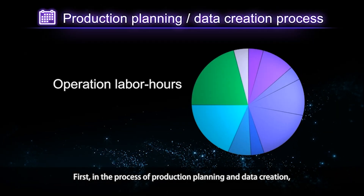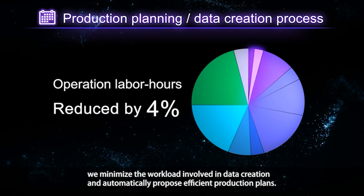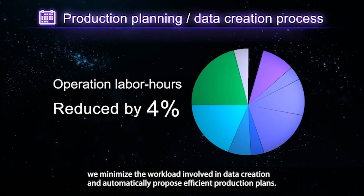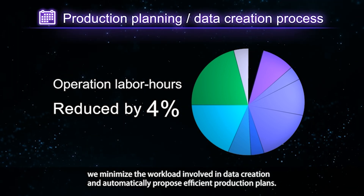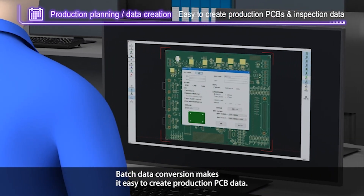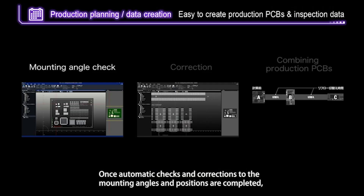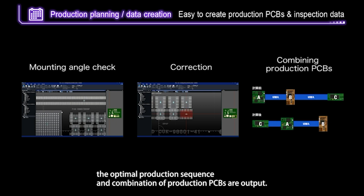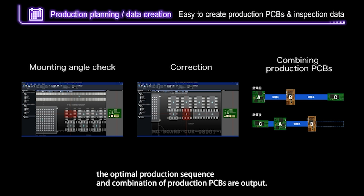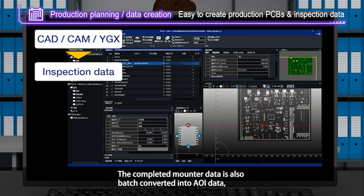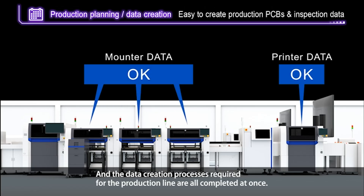First, in the process of production planning and data creation, we minimize the workload involved in data creation and automatically propose efficient production plans. Batch data conversion makes it easy to create production PCB data. Once automatic checks and corrections to the mounting angles and positions are completed, the optimal production sequence and combination of production PCBs are output. The completed mounter data is also batch converted into AOI data, and the data creation processes required for the production line are all completed at once.